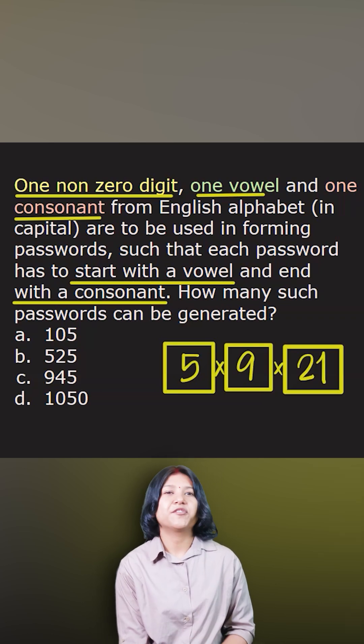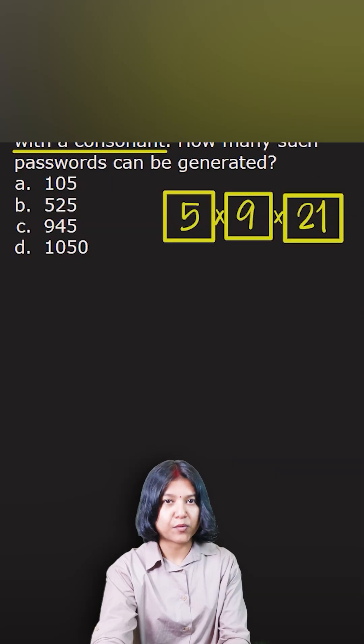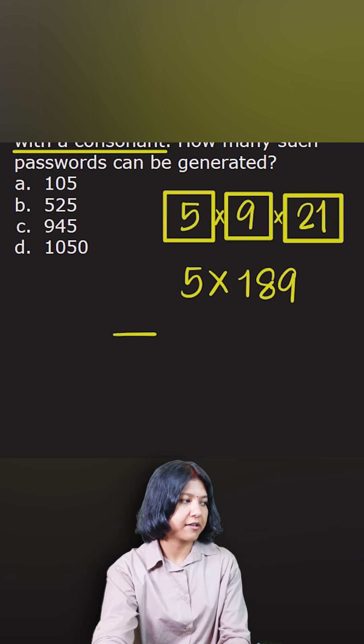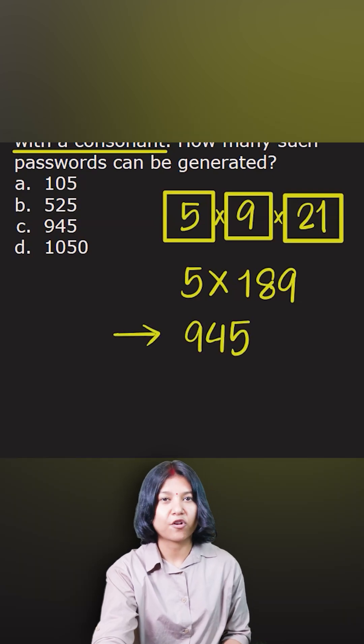So it's very easy. Nine times 21 - you can do that first, which gives you 189. Now five times 189, you can do that quickly. The answer is 945.